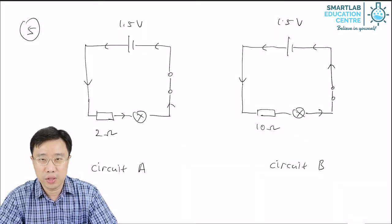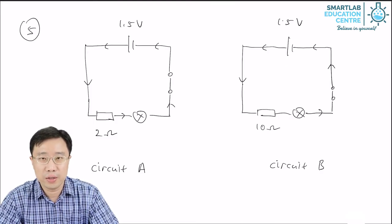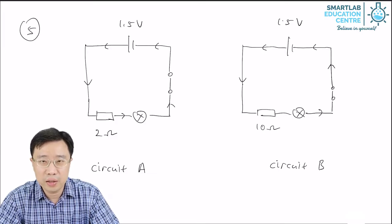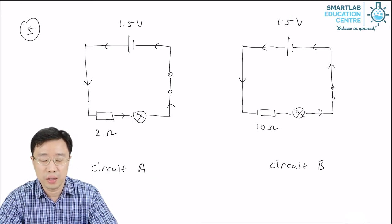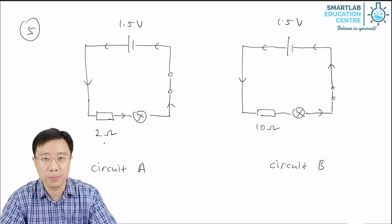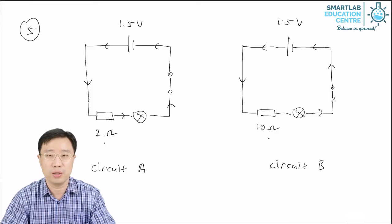Now, in the diagram that you see before you, there are two circuits, circuit A and circuit B. They are identical except for the resistance to the circuit. In circuit A, the resistance is 2 Ohm. In circuit B, the resistance is 10 Ohm.